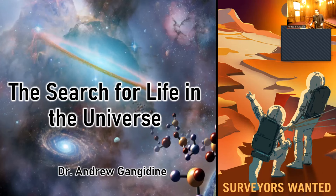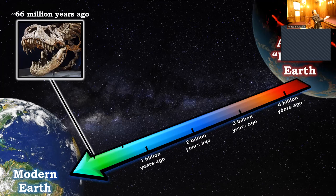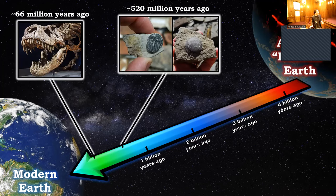I'm going to start off in a spot you might not expect. When we talk about studying ancient life, this is probably the type of stuff you think of — your classic T-rex. On the top right is a trilobite, and on the bottom the shell-looking thing is called a brachiopod. If we plot these on a timeline starting when the earth was formed, about four and a half billion years ago, the T-rex went extinct about 66 million years ago — geologically speaking, basically yesterday.